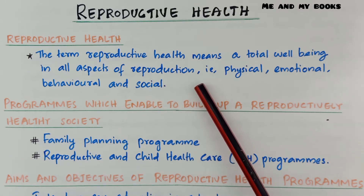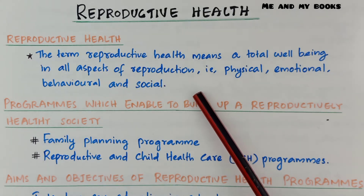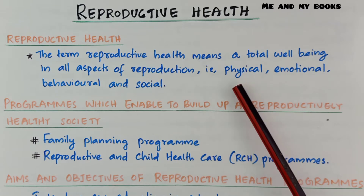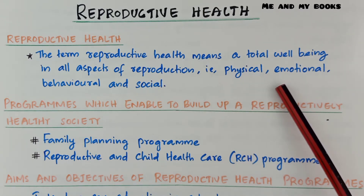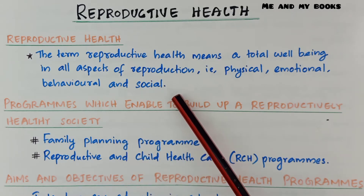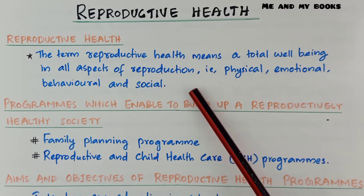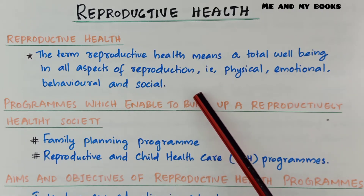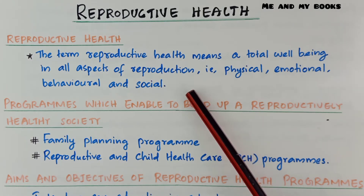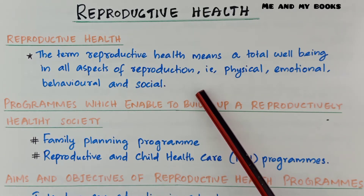Reproductive health means people are able to have a satisfying and safe sex life and they have the capability to reproduce. It is not merely the absence of any diseases — it includes normal reproductive ability, normal emotions and behaviors, and being a socially well-behaved individual. We can say that such a person is reproductively healthy.